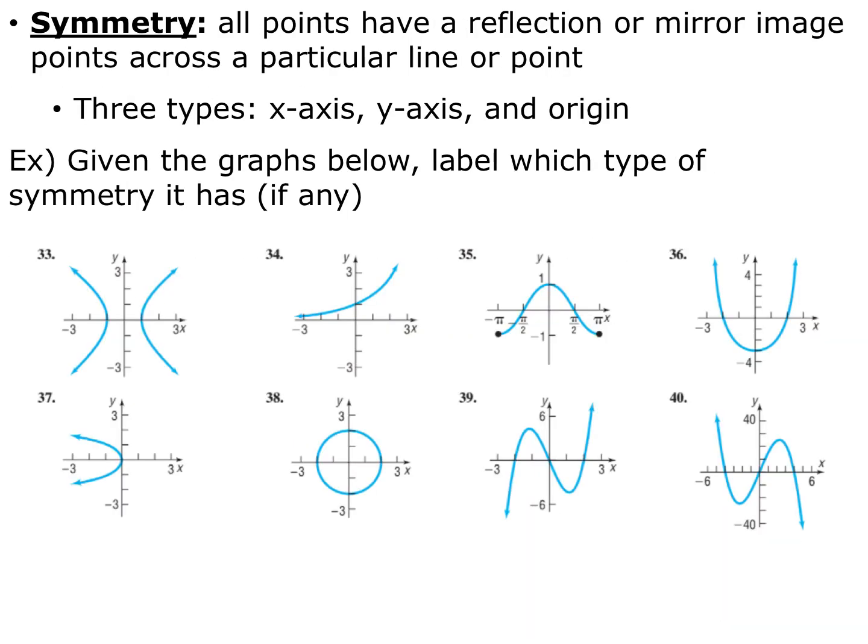Symmetry of a graph is when all points have a reflection or mirror image of a point across a particular line or point. The three types of symmetry we will look at are x-axis symmetry — reflexive across the x-axis — y-axis symmetry — reflexive across the y-axis — and origin symmetry — reflexive across the origin, or it can rotate 180 degrees. A graph can have no symmetry, one type, or more than one type. Look at these eight graphs below and decide what types of symmetry, if any, each graph has.